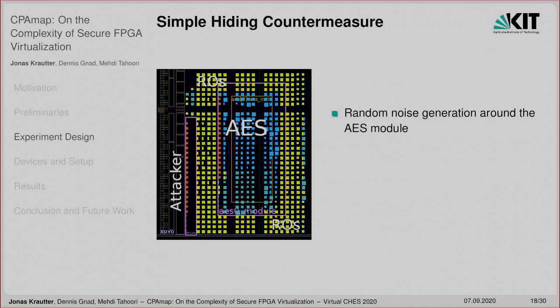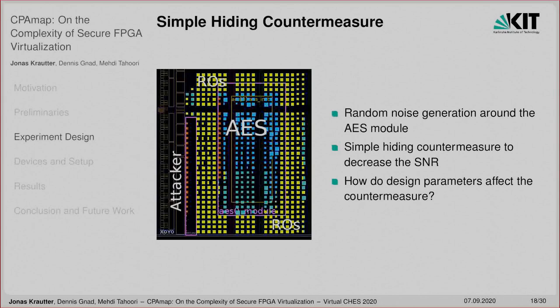To evaluate the effect of design parameters on side-channel countermeasures, we implemented a simple hiding countermeasure based on noise generation modules placed as a fence around the AES encryption core and randomly activated. This leads to a decrease in the signal-to-noise ratio for the attacker, making the attack more difficult and requiring more traces to recover the secret key. We wanted to answer how the design parameters affect the effectiveness of this countermeasure.